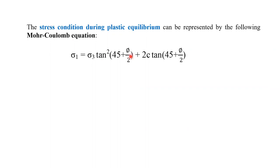From the Mohr-Coulomb failure equation: σ₁ = σ₃ tan²(45 + φ/2) + 2c·tan(45 + φ/2), which is also written as σ₁ = σ₃ tan²α + 2c·tan α, where α = 45 + φ/2. Here φ is the angle of shearing resistance, c is cohesion, σ₁ is the major principal stress, and σ₃ is the minor principal stress.